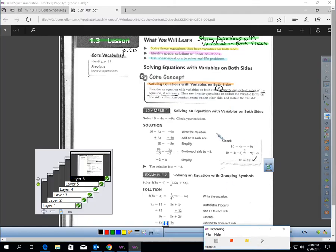Step two, use inverse operations to collect the variable terms on one side. Step three is then to collect the constant terms on the other side and isolate the variable.